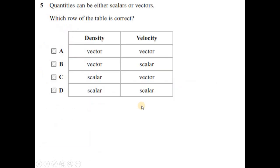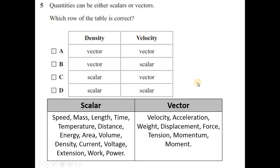Question 5: which row of the table correctly identifies whether a quantity is scalar or vector? If you memorize scalar and vector quantities from the table, density is a scalar and velocity is a vector. Options A and B can be eliminated immediately. Both C and D show density as scalar, but only C shows velocity as a vector, so the answer is option C.